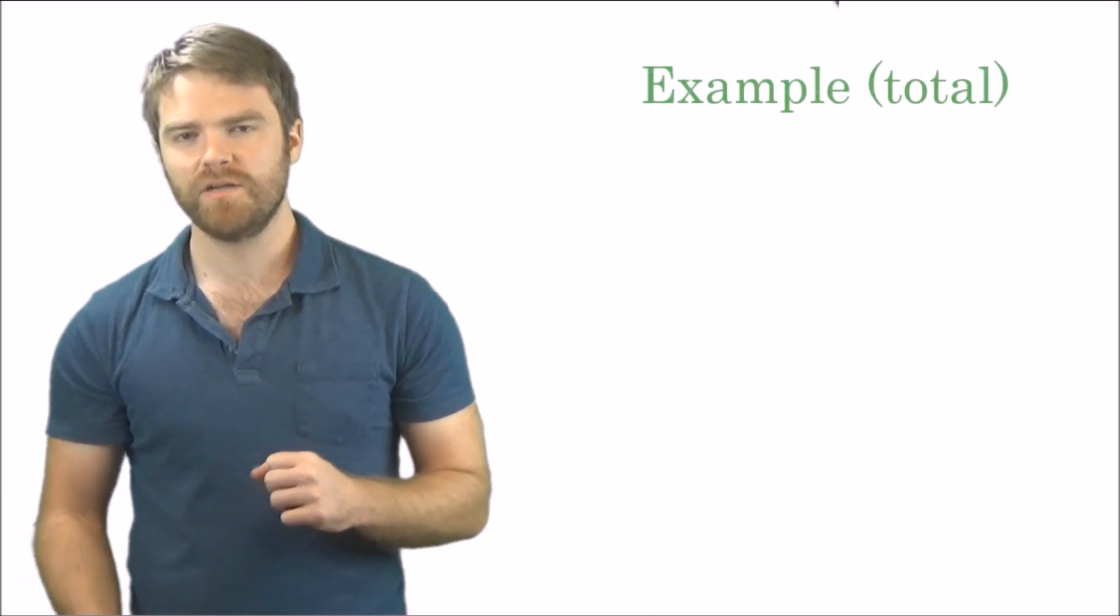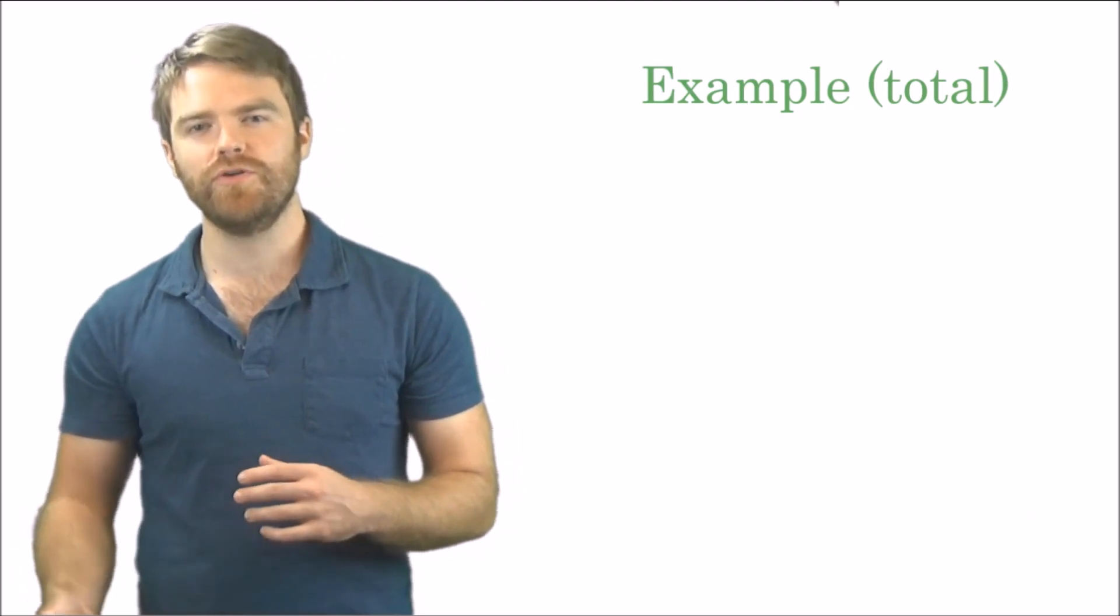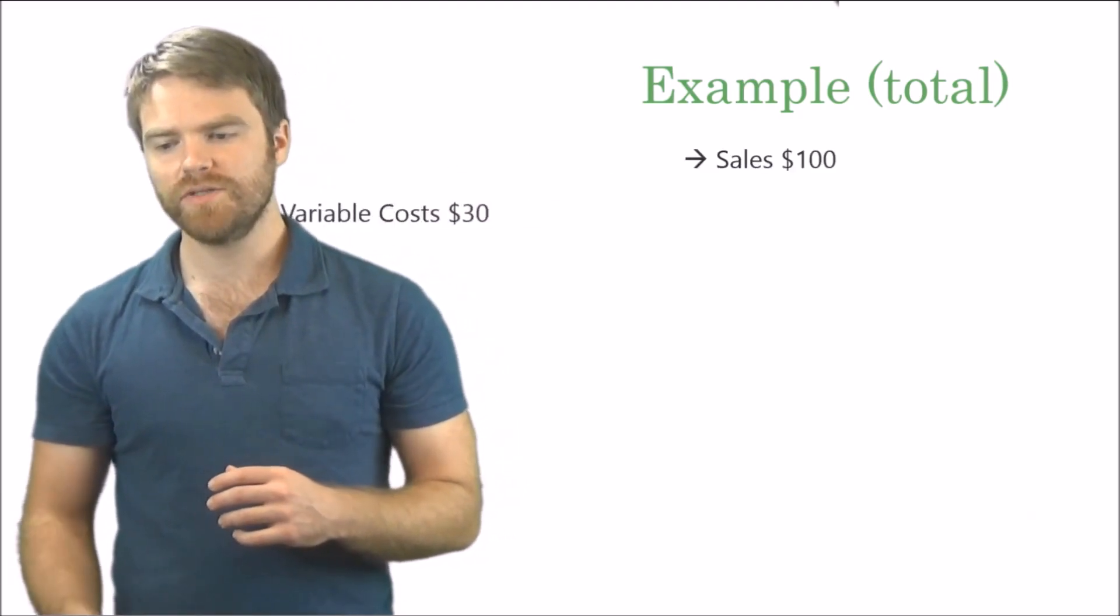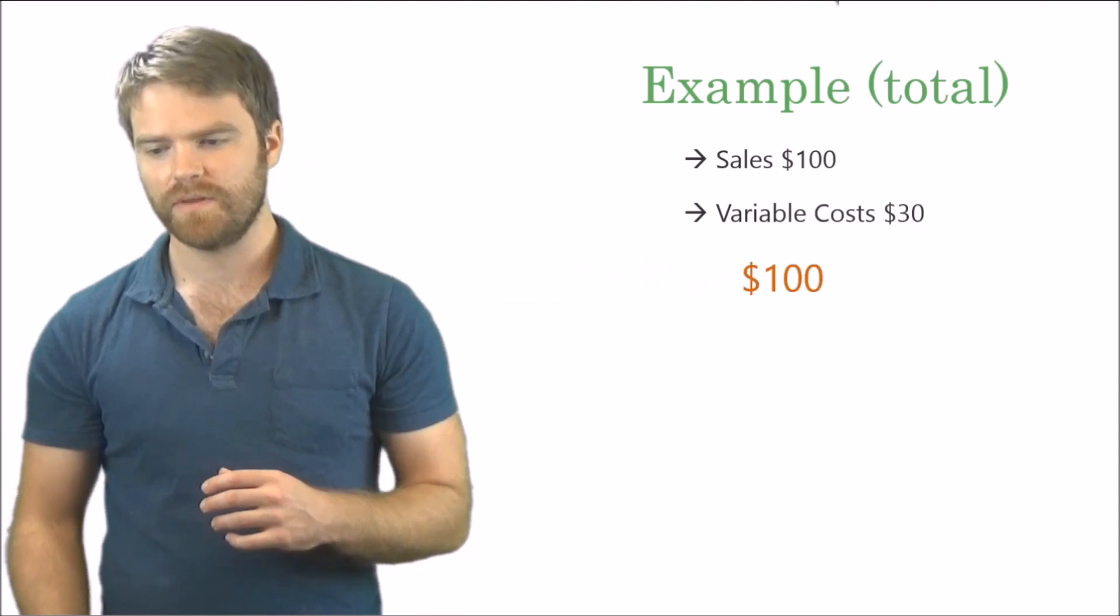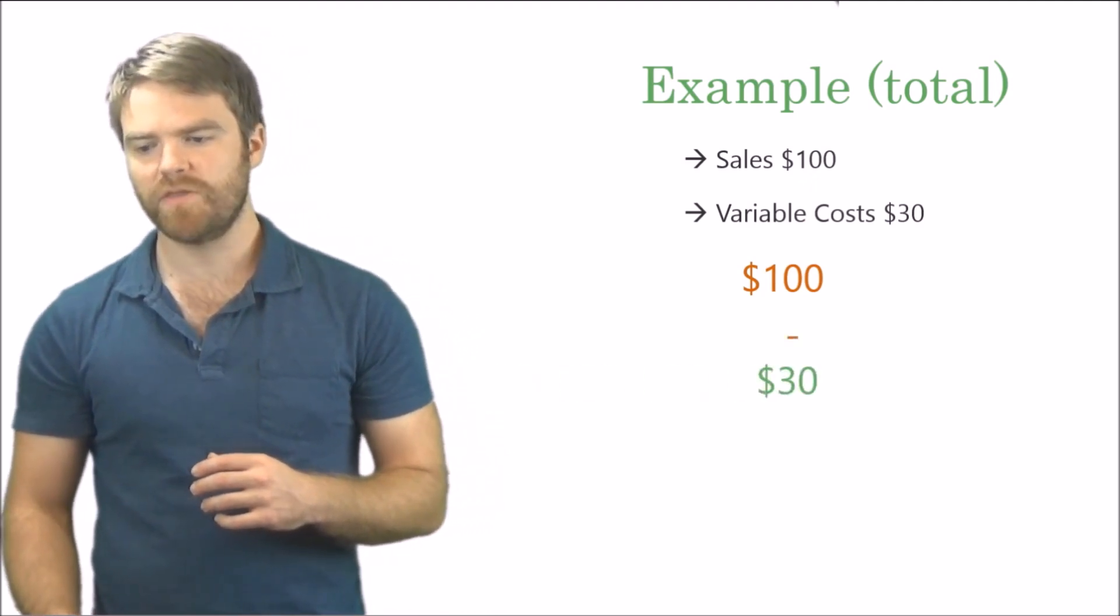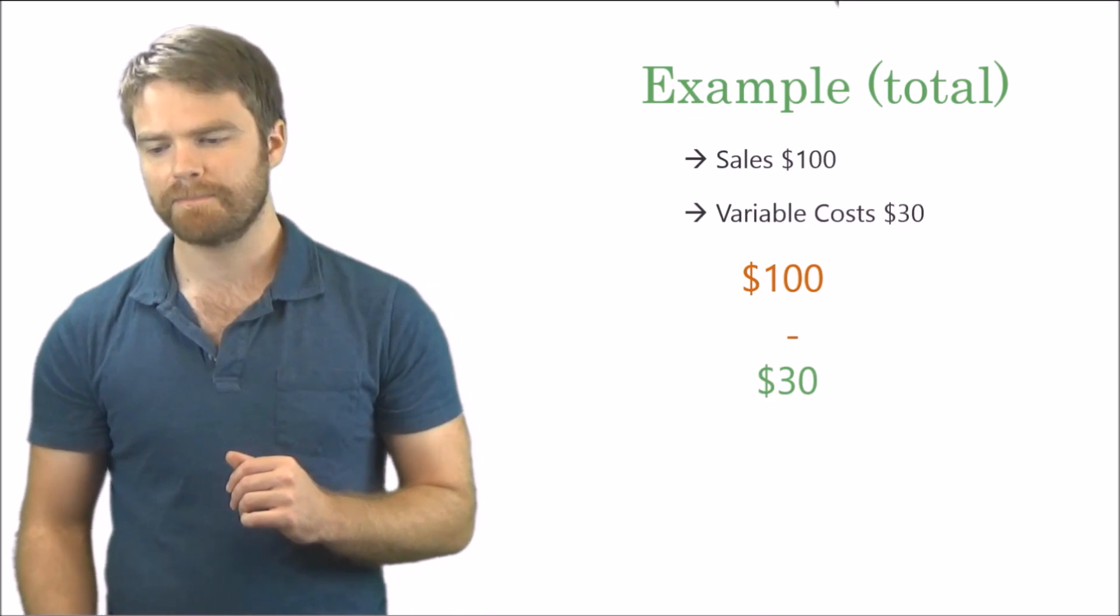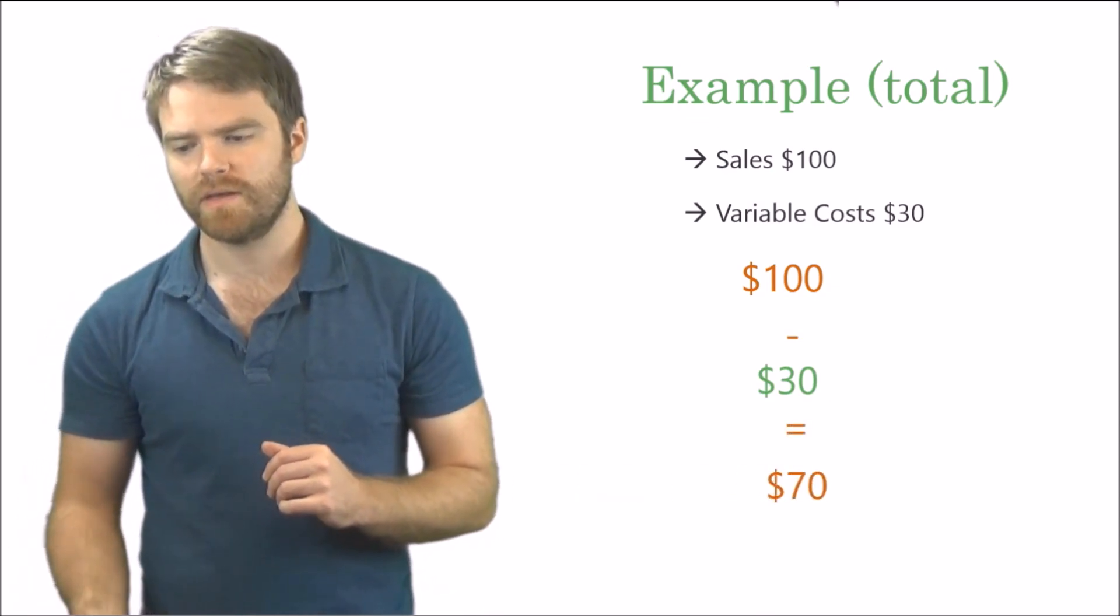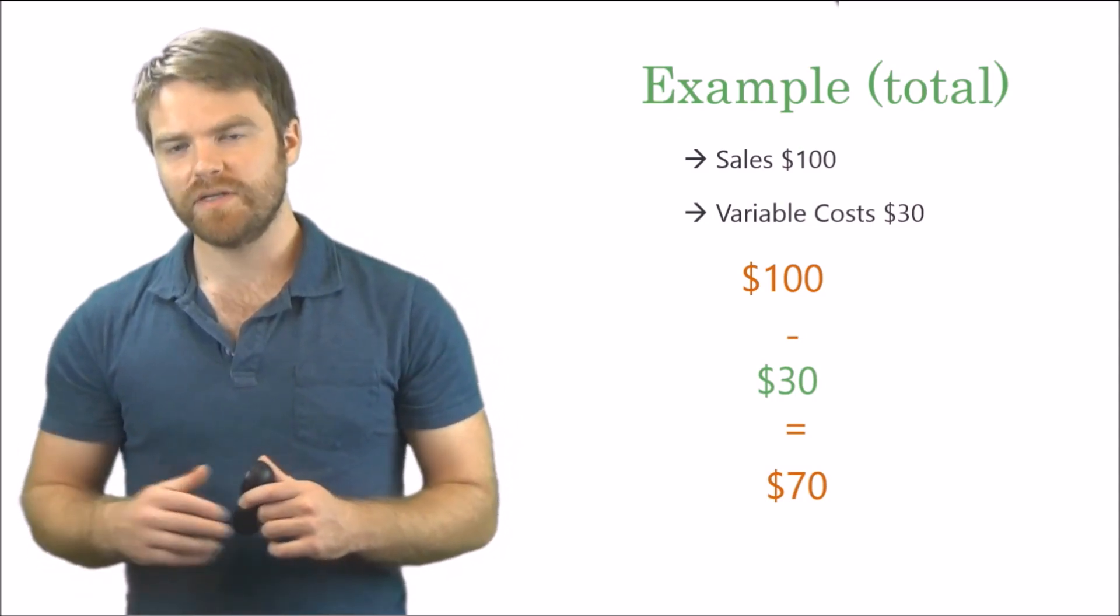So let's take a look here. We're going to go through a little example, and this is going to be in total, what I call it. So total, and in a second we'll do per unit. So sales in total is $100, variable cost is $30. So $100 for sales, variable cost is $30, so that will be your contribution margin is $70.